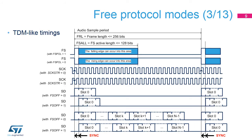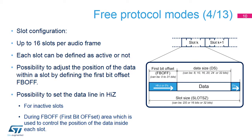In a TDM-like protocol, only one edge of the frame synchronization, rising or falling, is used to align the slot's position. The frame length, duty cycle, and polarity can be adjusted. The clock data strobe edge can be selected. The position of the slots with respect to the frame active edge can be selected. The size of the slots can also be adjusted, and the amount of slots per frame is up to 16. The SAI is able to handle up to 16 slots, and each slot can be individually activated or not. The inactive slots can be set in high Z. The slot size is always bigger than or equal to the data size.